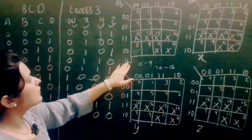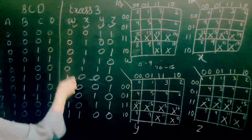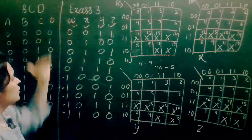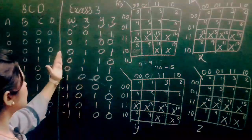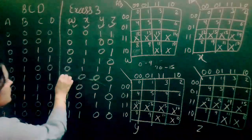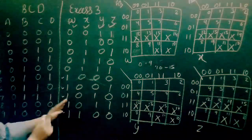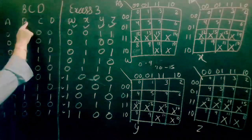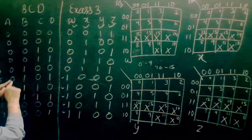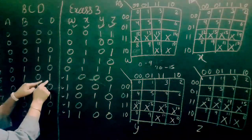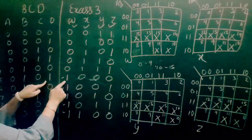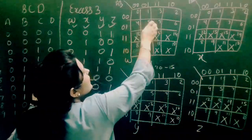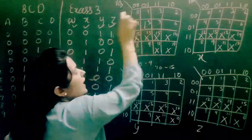Now let's fill these K-maps. Starting with W — W is 1 at certain points. When do we get W output as high? Here, the value of A, B, C, D is 0, 1, 0, 1 — at 0, 1, 0, 1 we get W as 1. Then at 0, 1, 1, 0 we also get W as 1. Then at 0, 1, 1, 1 we get 1 as well. And then at 1, 0, 0, 0 and at 1, 0, 0, 1 we get W as high.